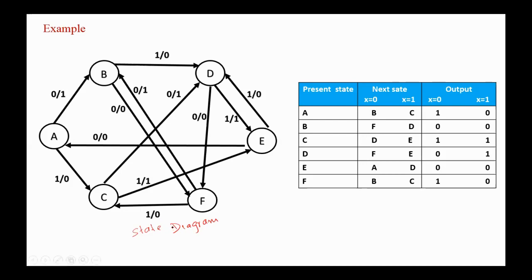Here is the state diagram, and we are asked to design the sequential circuit using JK flip-flops. First, we derive the state table for the given state diagram. We have six states: A, B, C, D, E, F, one input named X, and one output Y.